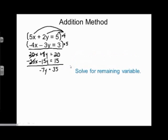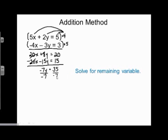Now I solve the remaining variable. My x has cancelled out and I'm left with negative 7y equals 35. To solve for y, I divide both sides by negative 7. A positive divided by a negative is negative, and 35 divided by 7 is 5, so y equals negative 5.